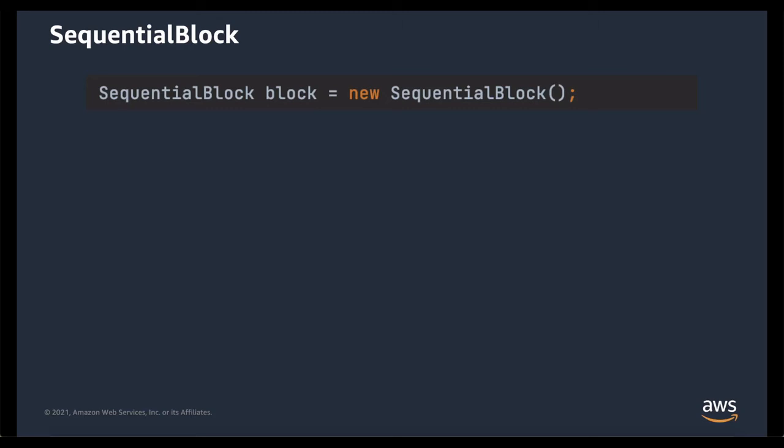When building blocks, the easiest way is to use composition. Similarly to how functions are made by calling other functions, blocks will internally be built up by other blocks. We have several helpers to make it easy to build common block structures. One of these is a sequential block that you see here, and it is used to create a chain of blocks where the output of one block is passed in as the input to the next block.